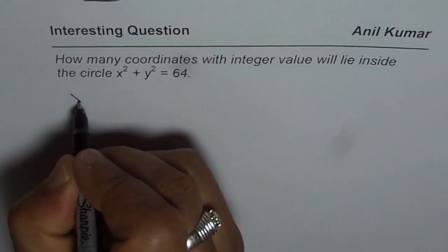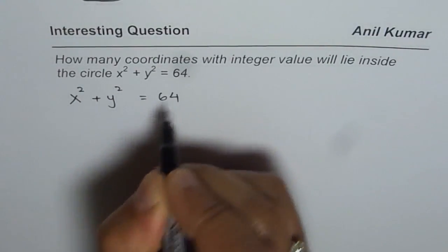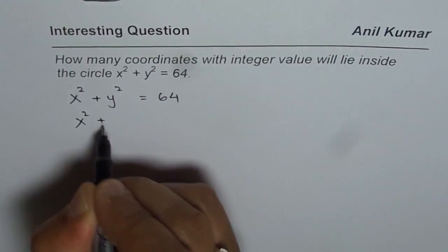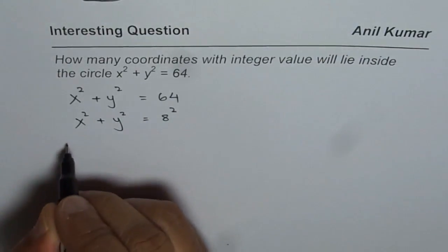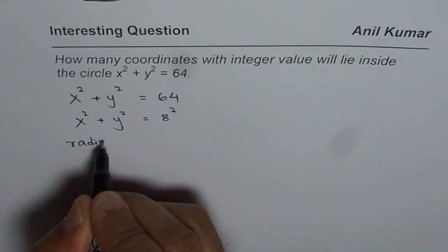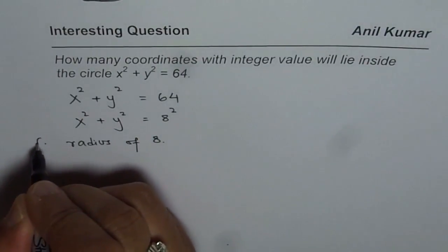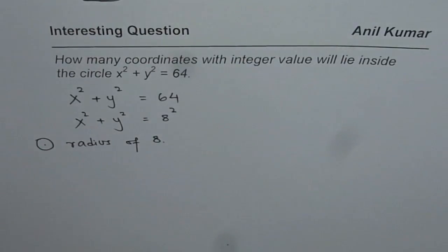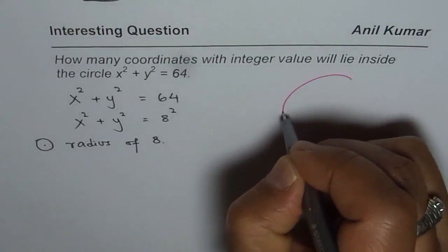The equation is x² + y² = 64, which we can write as x² + y² = 8². So we have a circle with a radius of 8 units. The question is how many coordinate points within this circle have integer values. You can pause and then answer the question.